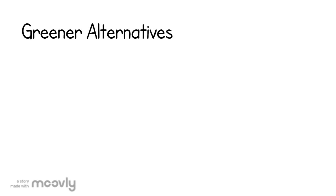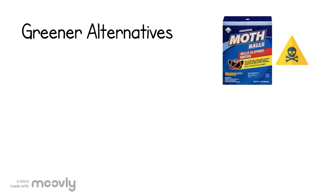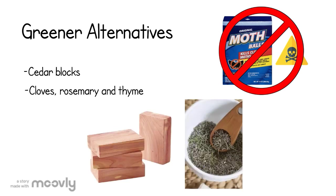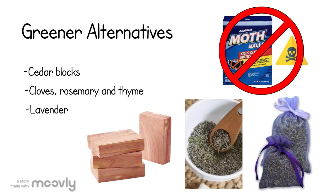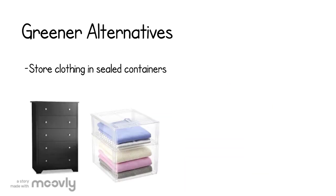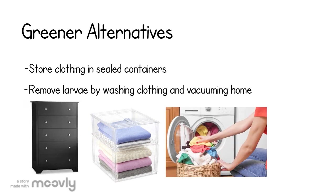Instead of using moth repellents that are toxic and contain naphthalene, natural alternatives such as cedar blocks, cloves, rosemary, and thyme in a sachet bag, and lavender in a sachet bag can be placed with clothing to prevent moth damage. Other safe methods include storing clothing in sealed containers away from moist environments, along with removing larvae by washing your clothing and vacuuming your home.